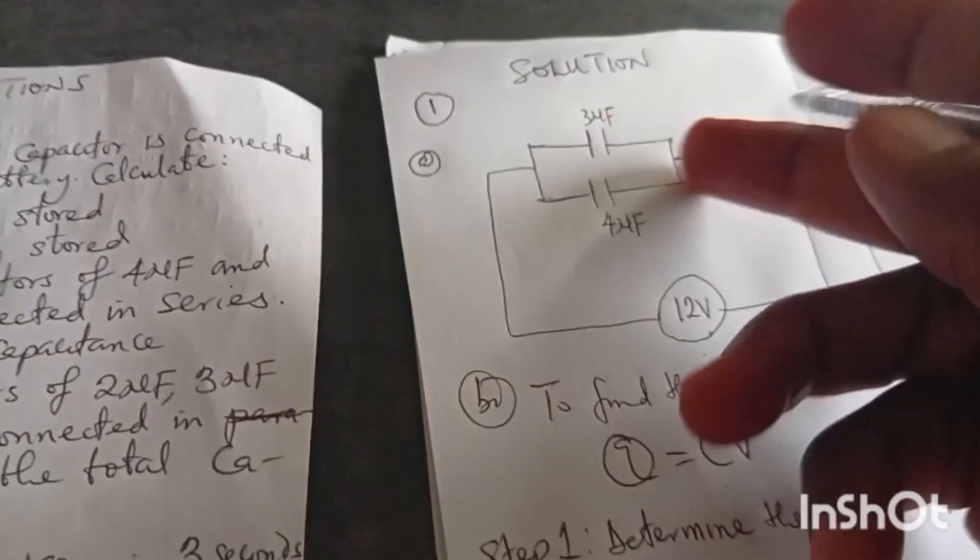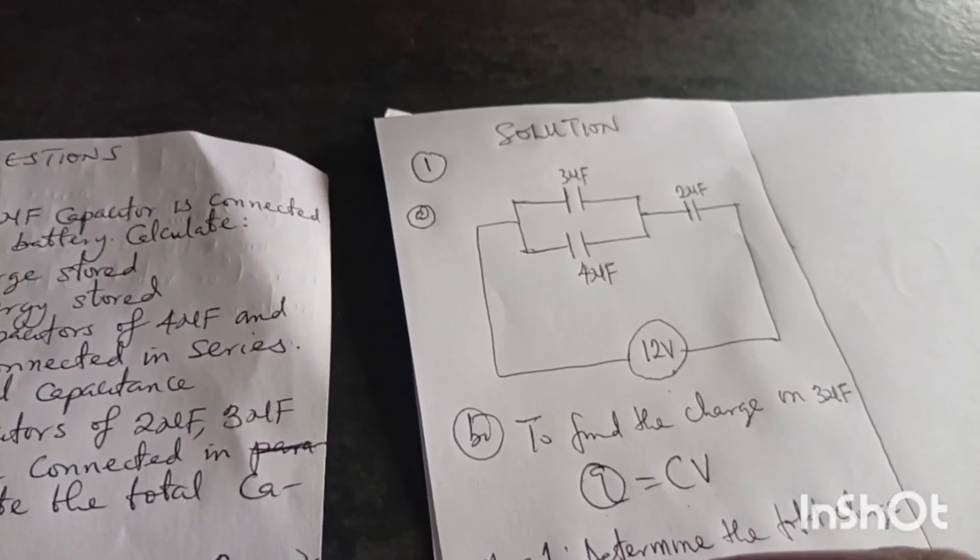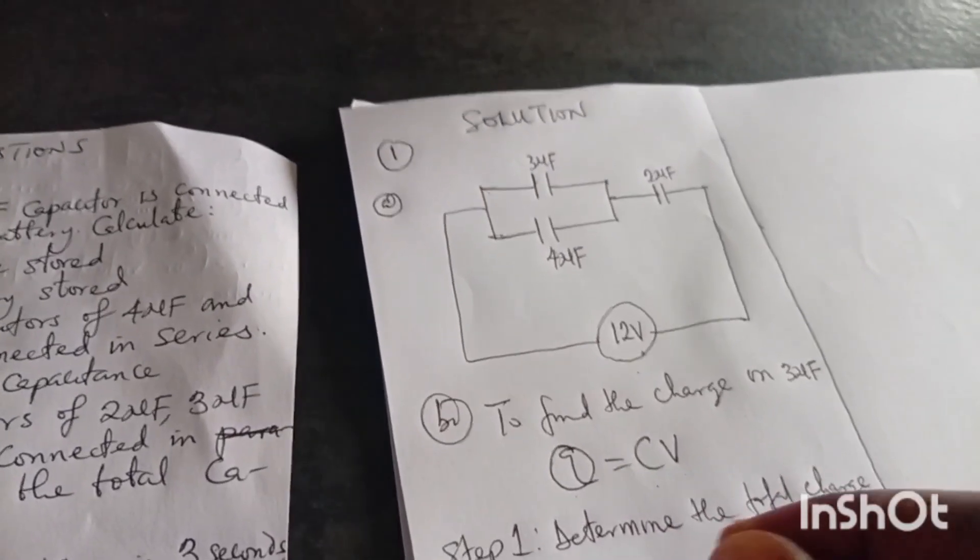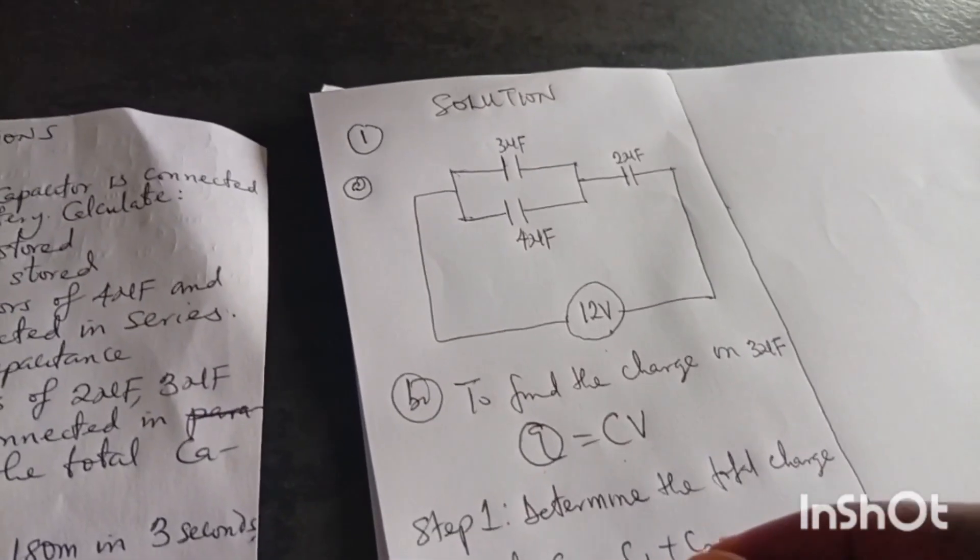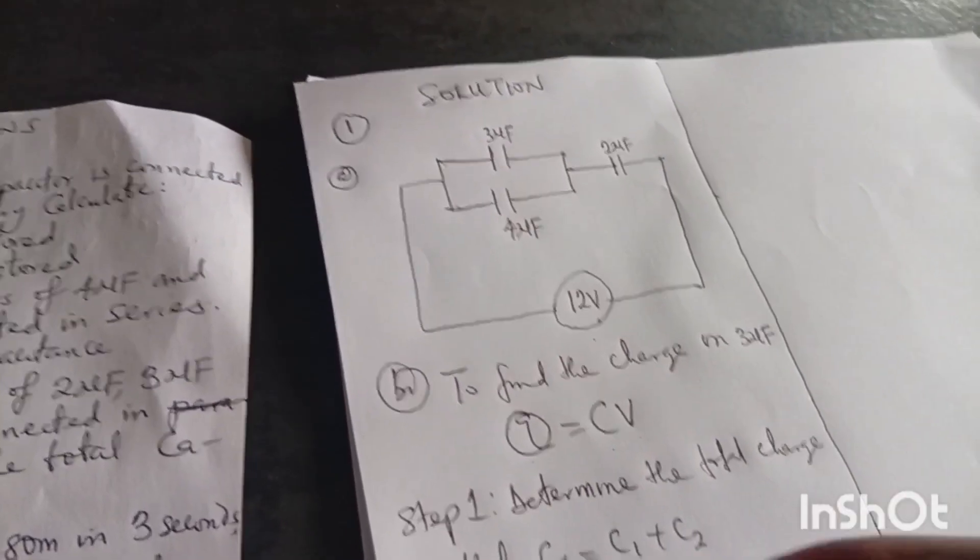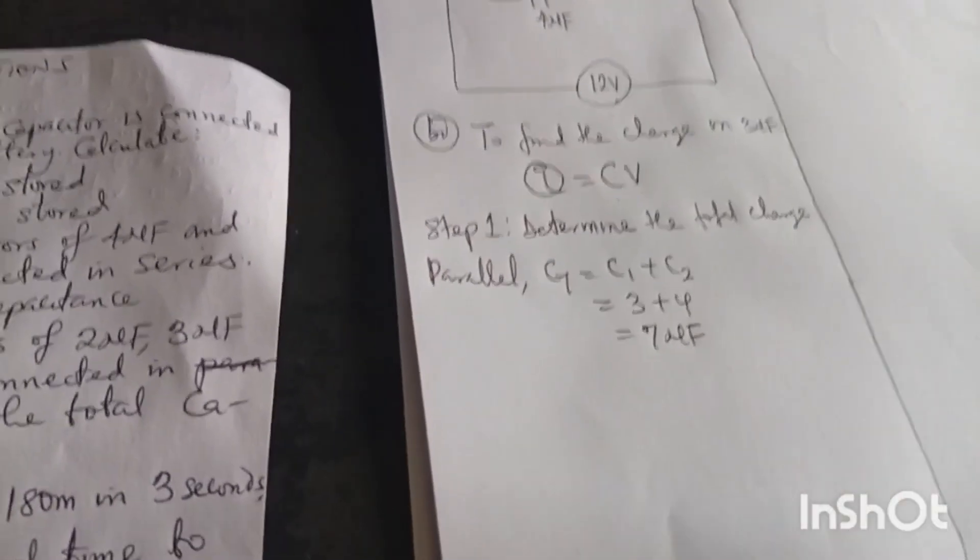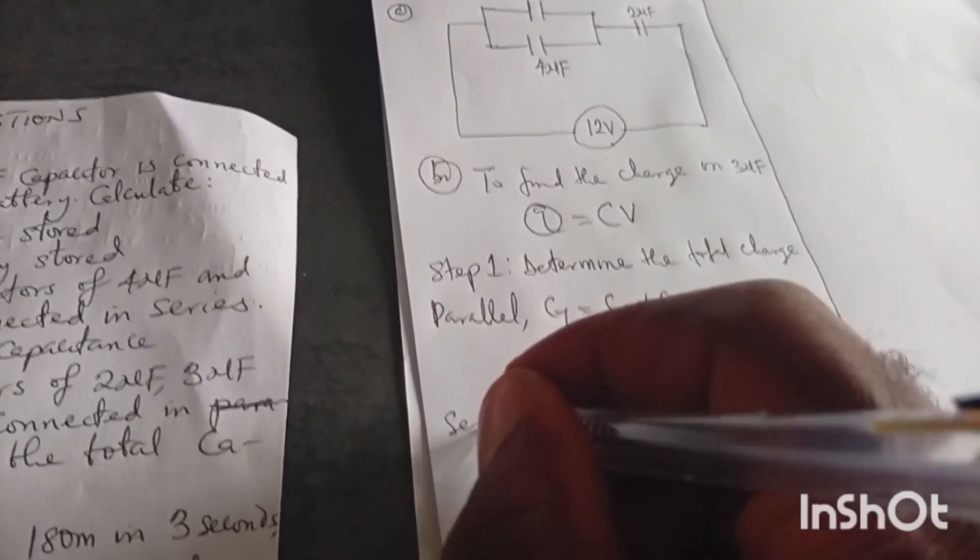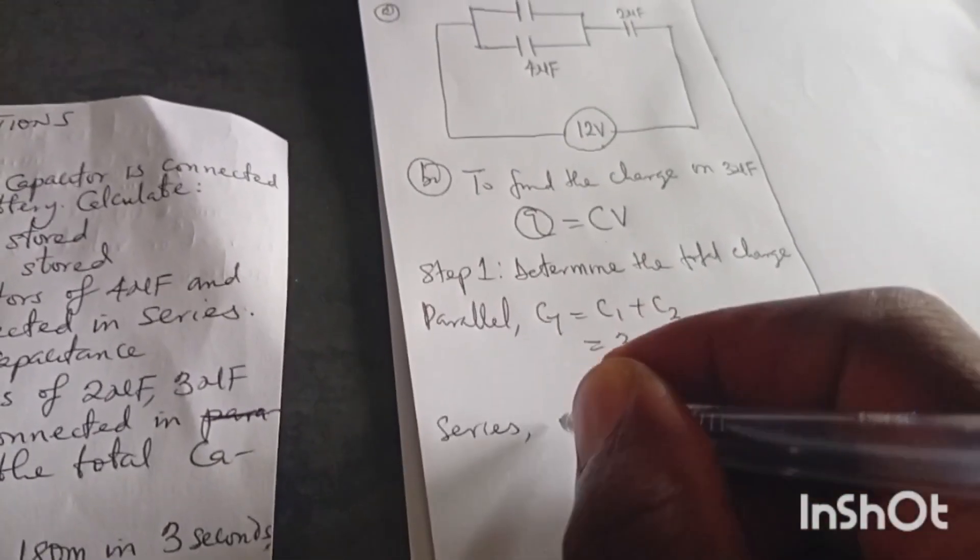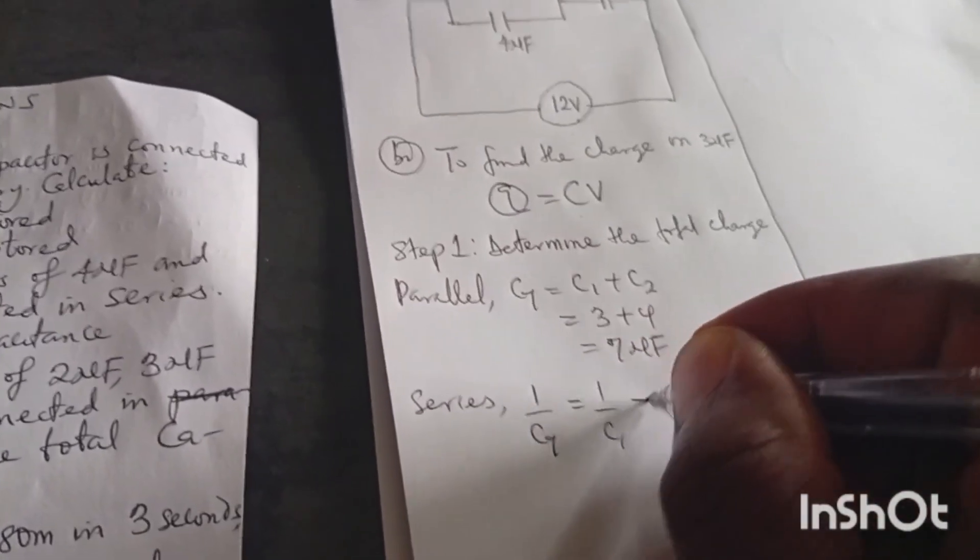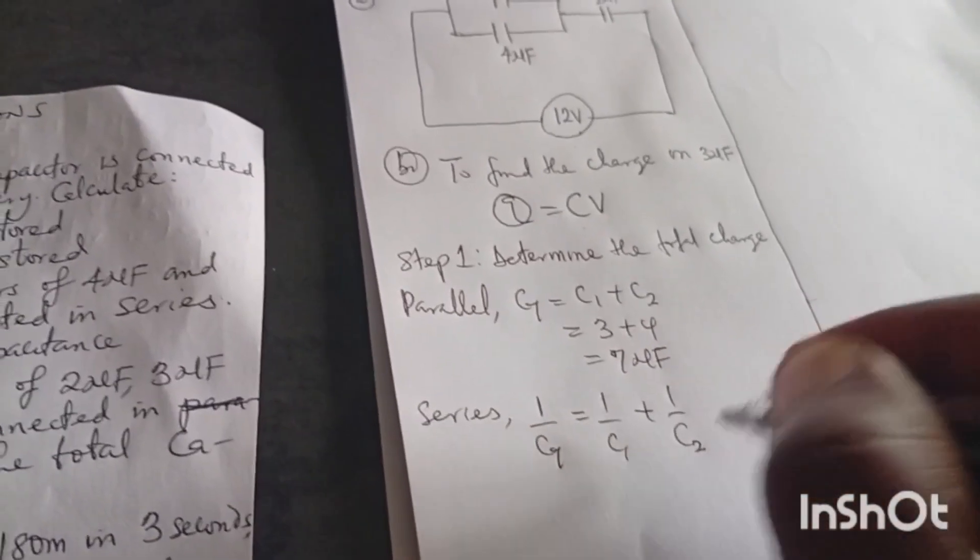You know when capacitors are arranged in parallel, you know what it means. When they are in parallel, that is Ct equals to C1 plus C2. Without one, we can get 3 plus 4 to give us 7 microfarads. But for the issue of when they are in series, you know what it means.